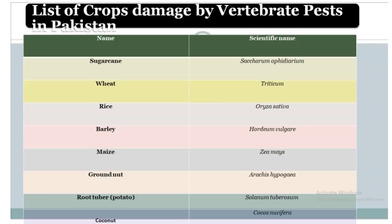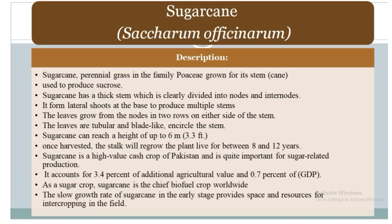Sugarcane is a perennial grass in the family Poaceae, grown for its stem. The cane is used to produce sucrose. Sugarcane has a thick stem clearly divided into nodes and internodes. It forms lateral shoots at the base to produce multiple stems. The leaves grow from the nodes in two rows on either side of the stem. The leaves are tubular and blade-like, encircling the stem. Sugarcane can reach a height of 6 meters, and once harvested, the stalk will regrow for between 8 and 12 years.